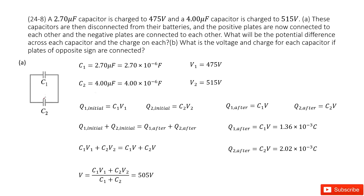So we have two capacitors, and the capacitance and the potential difference for each one is given. We write it as C1, V1, C2, V2. Now it tells us we need to find the situation where the capacitors are disconnected from each battery, and then the positive side of C1 is connected with the positive side of C2, and the negative side of C1 is connected with the negative side of C2.